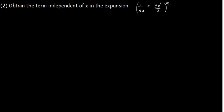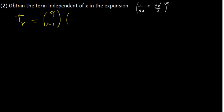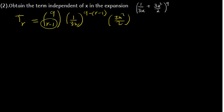Consider this one: obtain the term independent of x in the expansion. That term we don't know is called the rth term, and equals — the power for this expansion is 9. Here we say r minus 1, because whatever the value of r, if it is the fourth term we use 3 here, the seventh term we use 6 — it always reduces by 1. So we get the first term in the expansion, that is 1 over 3x, then subtract to get 9 minus r minus 1 as the power.